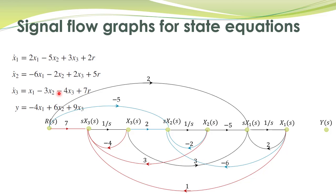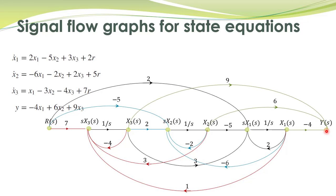We have implemented the state equations, and now the output equation. The output is minus 4x1 plus 6x2 plus 9x3. The signals x3, x2, and x1 are multiplied by 9, 6, and minus 4 respectively, and their sum gives the output signal. This is the signal flow graph representation of these state space models, and it is particularly useful when obtaining different state space representations for a system using Mason's gain formula.